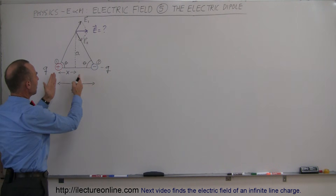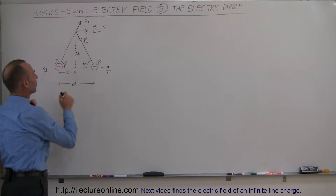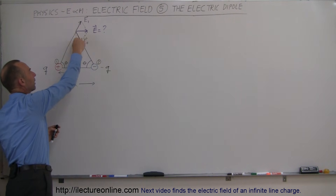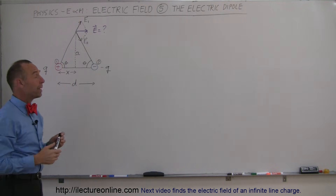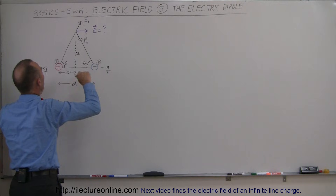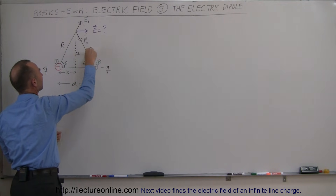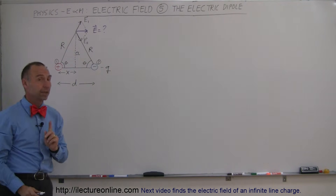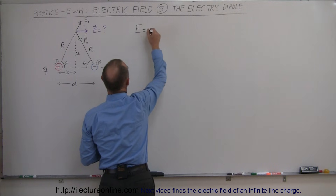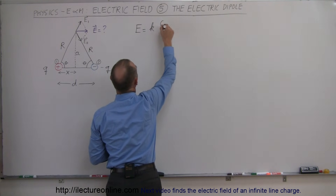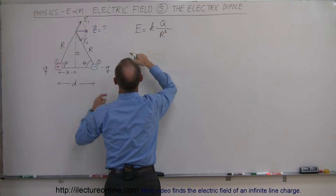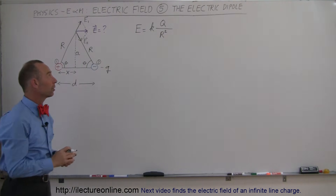Notice the separation between the charges is D; therefore, x is half the distance between them. The distance from the line connecting the two charges to the point of interest is A, and the distance from that point to either charge is R. The general equation for the electric field due to a point charge is E = kQ/R², where k, Q, and R are as defined.